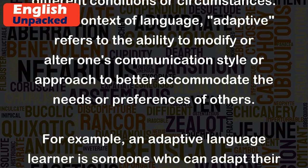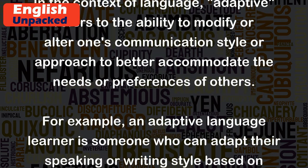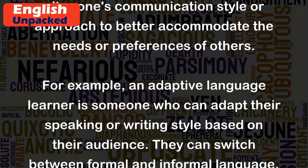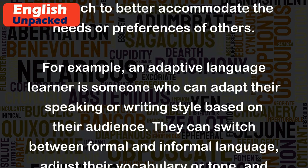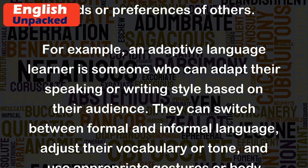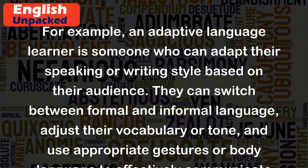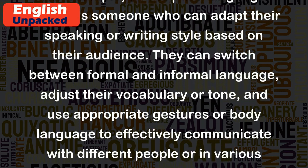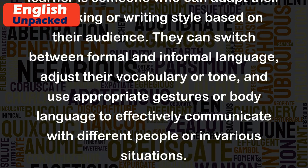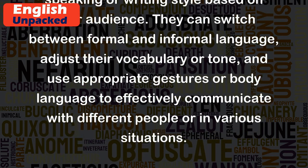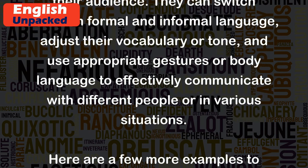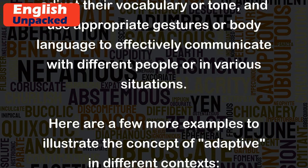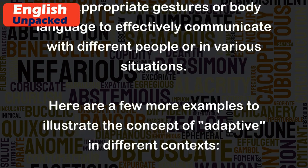For example, an adaptive language learner is someone who can adapt their speaking or writing style based on their audience. They can switch between formal and informal language, adjust their vocabulary or tone, and use appropriate gestures or body language to effectively communicate with different people or in various situations. Here are a few more examples to illustrate the concept of adaptive in different contexts.